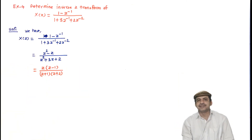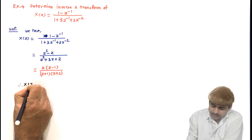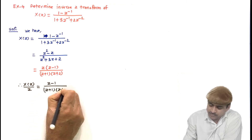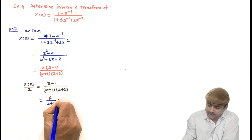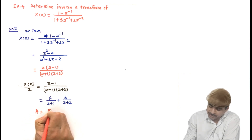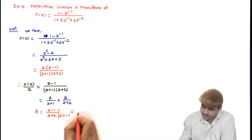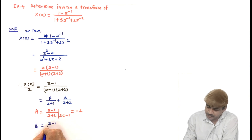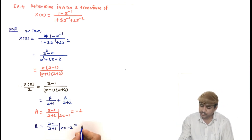Multiplying by Z squared gives (Z² minus Z) divided by (Z² plus 3Z plus 2), which factors as Z(Z−1) divided by (Z+1)(Z+2). This is now in standard form. Taking X of Z by Z gives (Z−1)/[(Z+1)(Z+2)] = A/(Z+1) plus B/(Z+2). Finding A with Z=−1: (−1−1)/(−1+2) = −2/1 = −2. Finding B with Z=−2: (−2−1)/(−2+1) = −3/(−1) = 3.